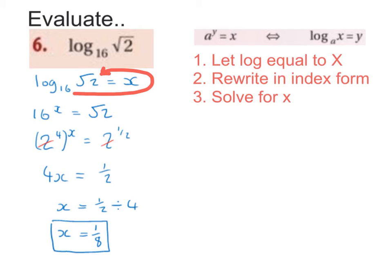16 I'm going to rewrite as a base of 2 — that's going to give me 2 to the power of 4, with brackets around it, very important. And root 2 I'm going to rewrite as 2 to the power of a half. Now that I can see my bases are matching, I can cancel out my bases, which in this case are both 2. Then I'm going to say 4 multiplied by x, because I'm raising a power to a higher power — that gives me 4x, and I bring down the half. So if 4x is equal to a half, x is going to be a half divided by 4, which will be 1 over 8.